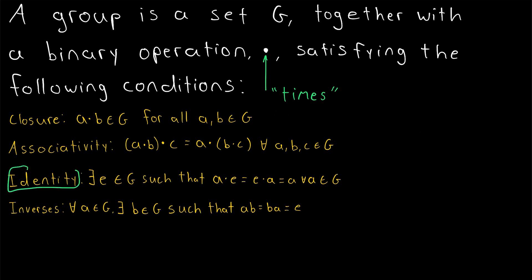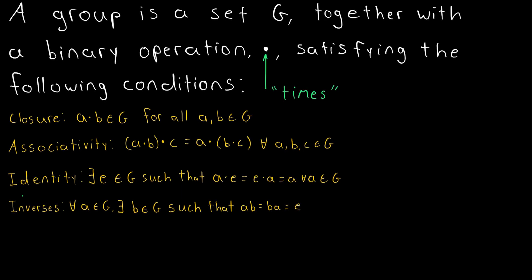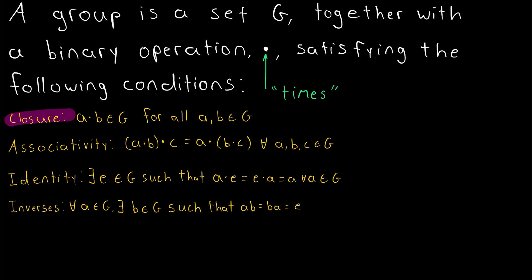Then we've got the existence of an identity as the third group axiom: there should exist an element in the set, often called E, such that any element combined with E in any order is left unchanged. Lastly, we have the existence of inverses: for every element A in the set, there must be some element B such that combining A with B in any order produces the identity E. So if a set G with a binary operation satisfies closure, associativity, the existence of an identity, and inverses, then it is a group.